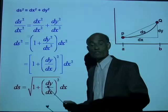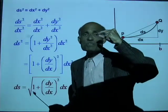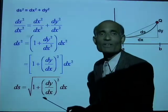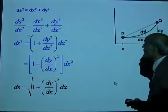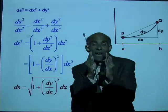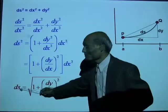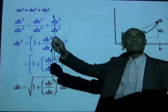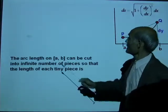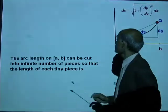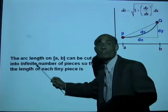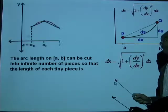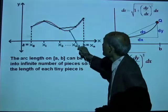To find the entire arc length s, we add all such ds values, or integrate from x = a to x = b. The arc length on the interval [a, b] can be cut into an infinite number of such pieces. The length of each of these small arcs is given by ds = √(1 + (dy/dx)²) · dx.